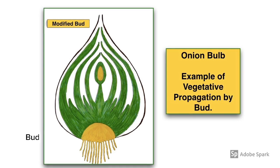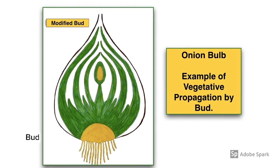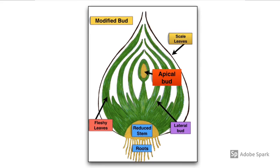The last example of natural vegetative propagation using the bud is the onion bulb. The onion bulb is a modified bud, containing a modified shoot system and a root system, all underground. It consists of a reduced stem, lateral buds, and swollen fleshy leaves that contain stored food. It is these lateral buds that have the potential to give rise to new onion plants.